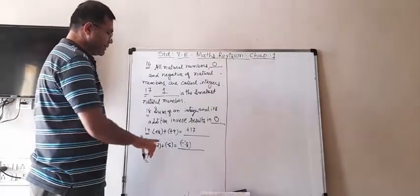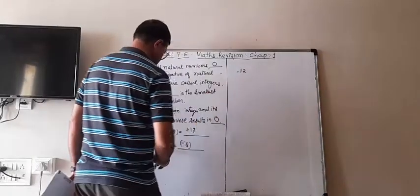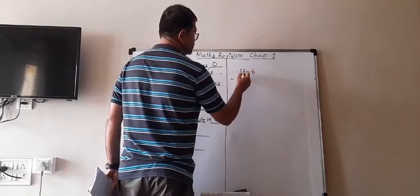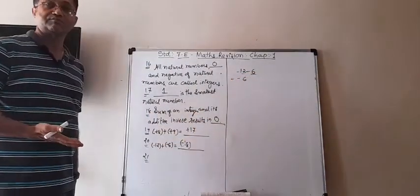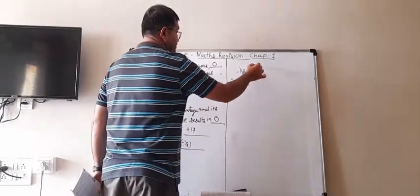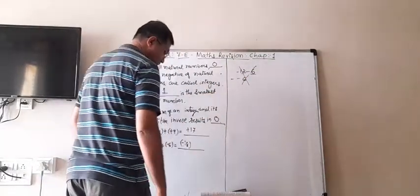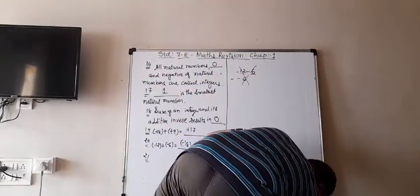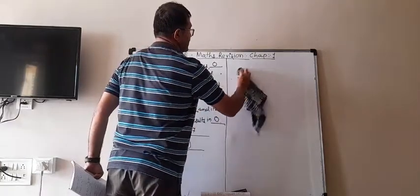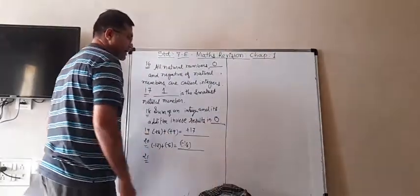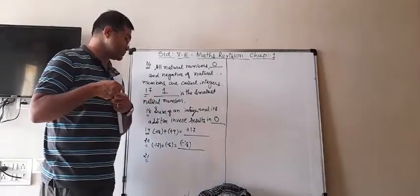Sometimes students make the mistake of doing (-12) + (-6) as 12 - 6 = 6, giving -6. That is totally wrong. We have both negative numbers, so we add them: -12 - 6 means both are negative, so we add and the answer is again negative.